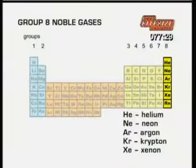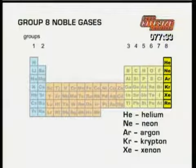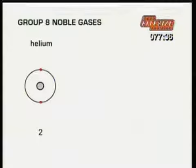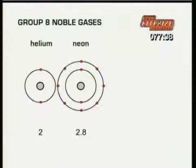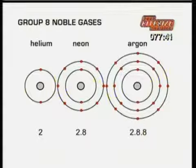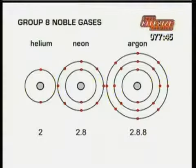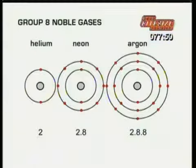By their position in group 8 of the periodic table, we know that each of the noble gases has a full outer shell of electrons. Helium has two electrons. Neon has two and eight electrons. Argon has two, eight and eight electrons, and so on. That full outer shell makes them all extremely unreactive. But just like the alkali metals and the halogens, their properties do change as you move down the group.